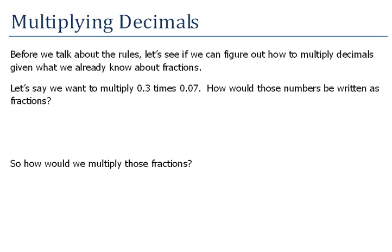We're going to talk about multiplying decimals now, and let's see if, before we actually introduce the rules, we can kind of figure out, given what we already know about fractions, how to multiply these decimals. So let's say that we want to multiply 0.3 times 0.07.